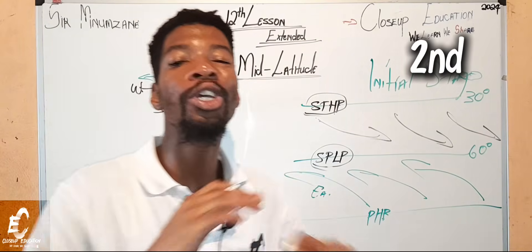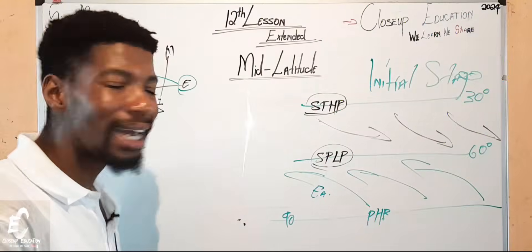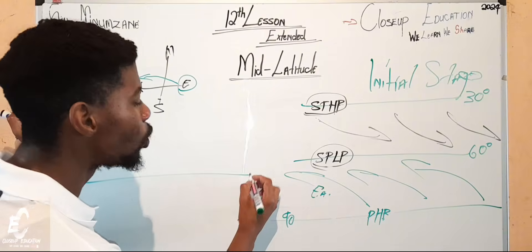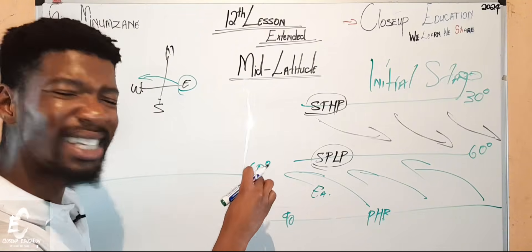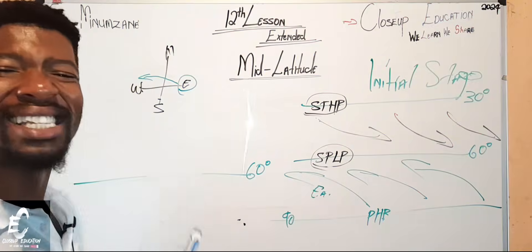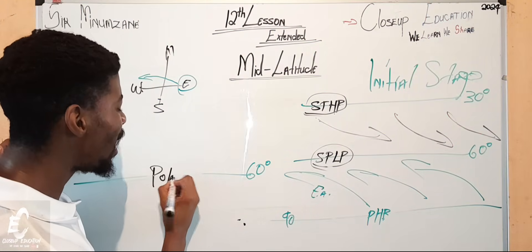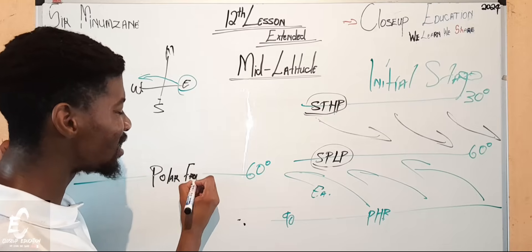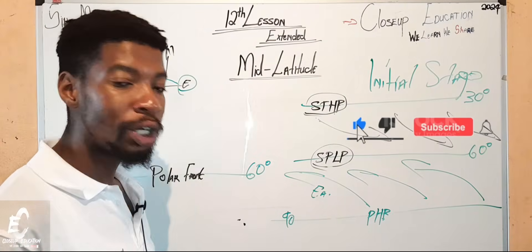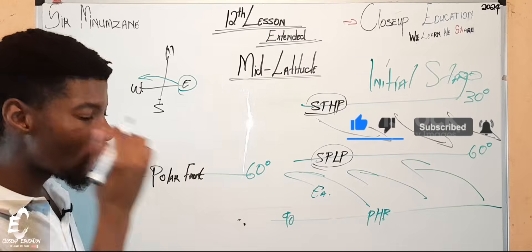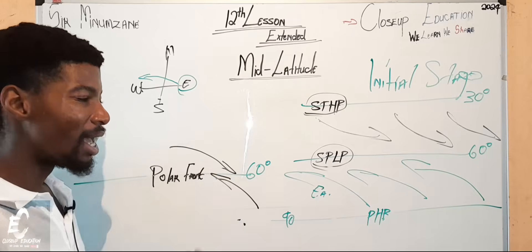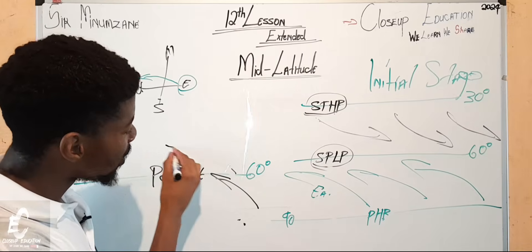Now let's move to the second stage: the wave formation stage. At 60 degrees — which is given the name 'polar front' — this latitude line becomes very important in the formation of a mid-latitude cyclone. There is cold air coming from one side and warm air coming from the other.